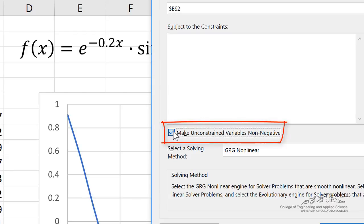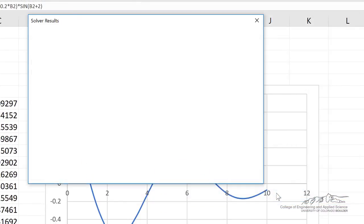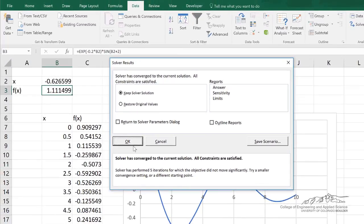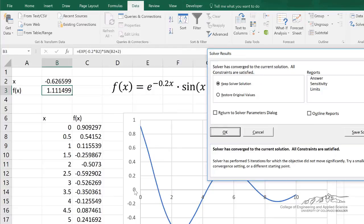So if I deselect that, then I can allow for negative values of x. So let's go ahead and rerun it. So now it goes through and if I would have plotted negative numbers here, there would have been another max at about x equals negative 0.62.